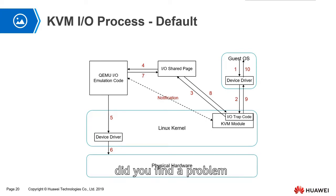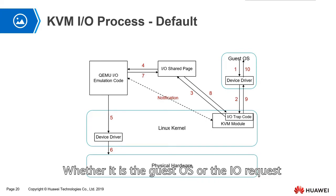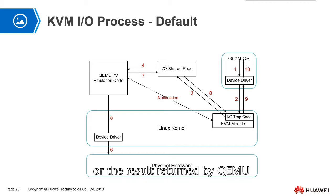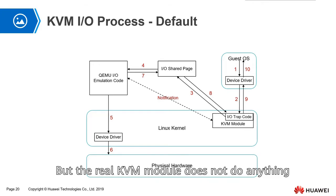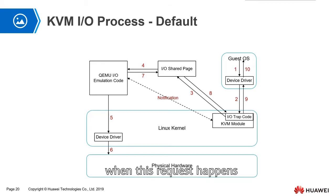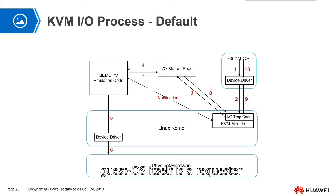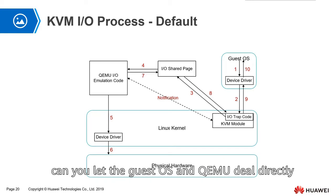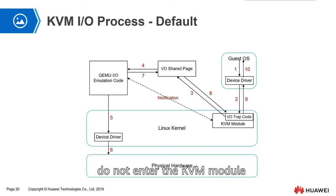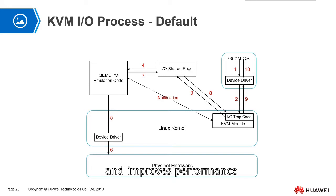During the whole process, do you find a problem? Whether it is the guest OS sending an IO request or QEMU returning the result, it must go through the KVM module. But the real KVM module does not do anything meaningful when this request passes through. Is there any way to let the guest OS and QEMU deal directly without entering the KVM module? My guest OS is the requester and QEMU is the processor.